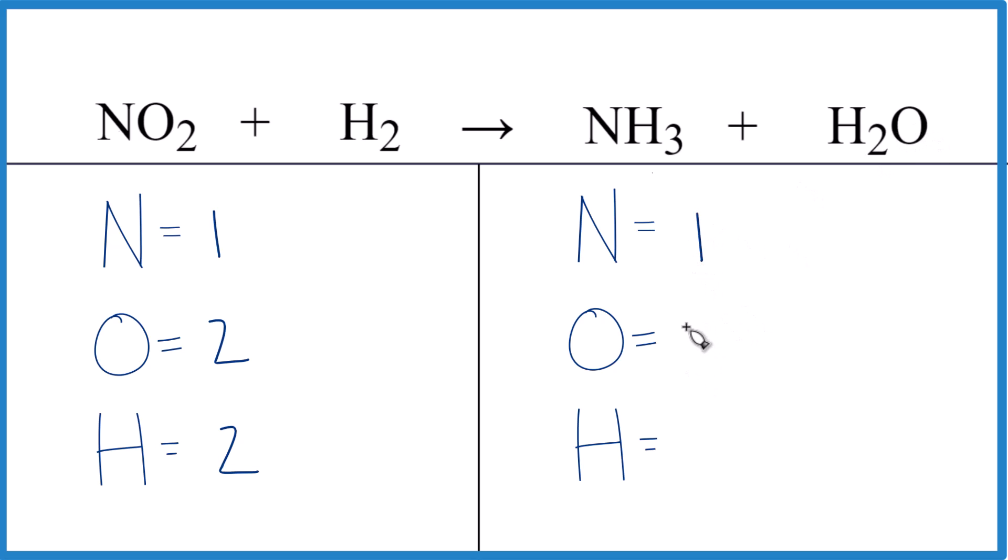Oxygens we have just the one, but hydrogens three plus two, five of those. We're going to leave the hydrogens till last because it's just hydrogen by itself here. When we change this coefficient, it won't change nitrogens or oxygen, so leave that till last.